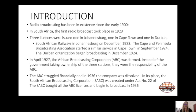The Johannesburg station was the first to go live, through the South African Railways in December of that year. The next was run through the Cape and Peninsula Broadcasting Association in September of the following year, and the Durban organization began broadcasting in December of that year. A couple of years later, in April 1927, the African Broadcasting Corporation, or ABC, was formed.